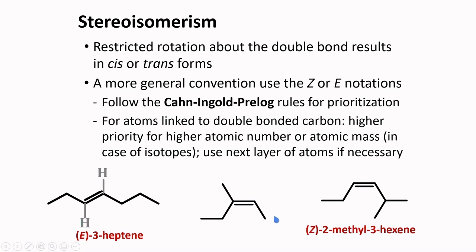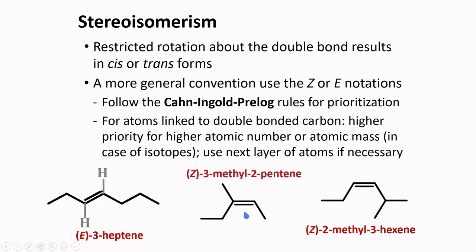For a compound with methyl and ethyl groups, in terms of priority, the ethyl group has a carbon connected to another carbon, while the methyl group carbon is connected only to hydrogens. So the ethyl group has higher priority than the methyl group. On the other side of the double bond, one group has higher priority, giving a Z isomer. The name of this compound is (Z)-3-methyl-2-pentene.